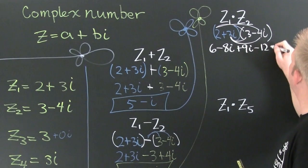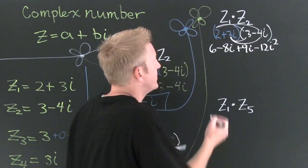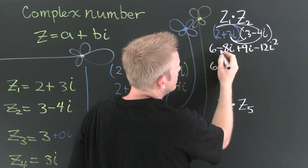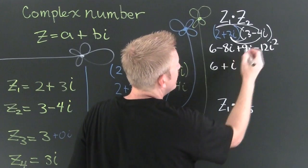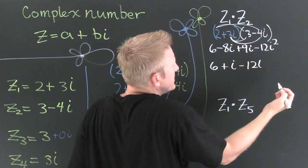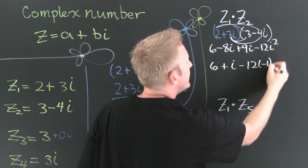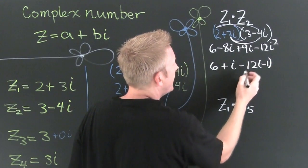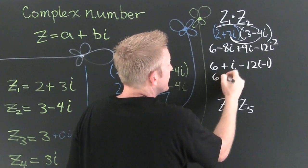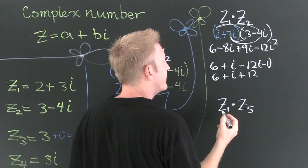This one times that one is 6. Outer is minus 8i. Inner is plus 9i. Last is minus 12i squared. Now we've got to clean it up a little bit. This is 6 plus i. Wait for it. Minus 12 times what? What was i squared from the previous video? Minus 1.